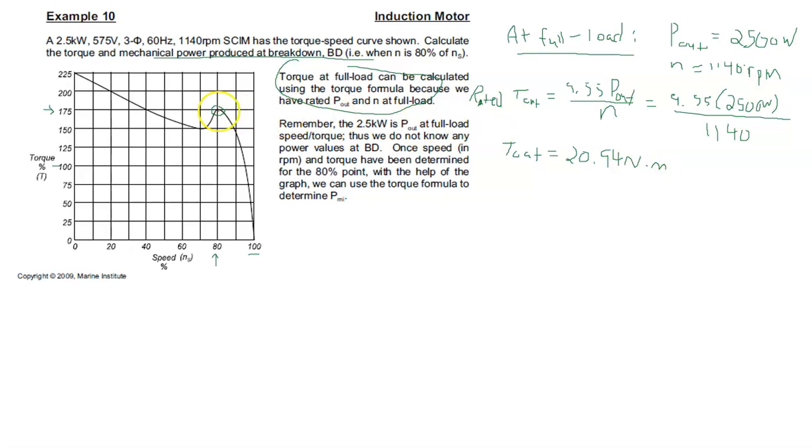Remember what we're trying to do now. We're trying to find P out at breakdown. In order to do that, we need to know the torque at breakdown. We can find that now - 175% of that rated value we just calculated. We also need to figure out the speed, and the speed we're given is N, but this is percent of Ns, so we've got to think about what Ns is.